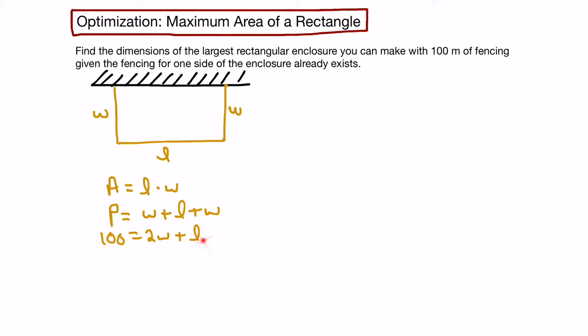Now we can isolate our variable L here, and that would be the easiest one to do. If we did that, we would get 100 minus 2w equals L.